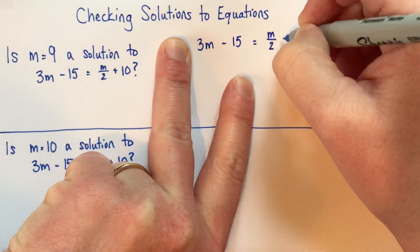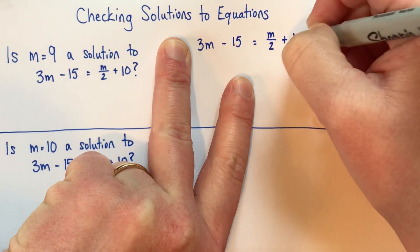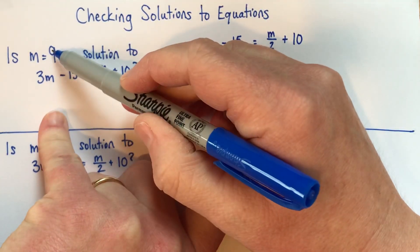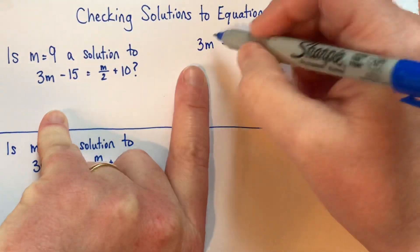And this looks like a fraction, and it is, but it's also, you can think of it just as a division symbol. And then we replace our m with 9 in both cases here.